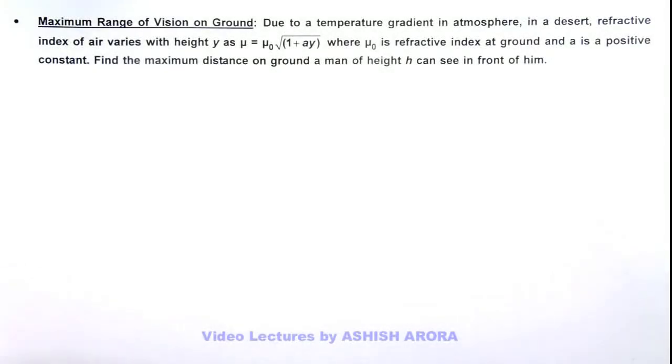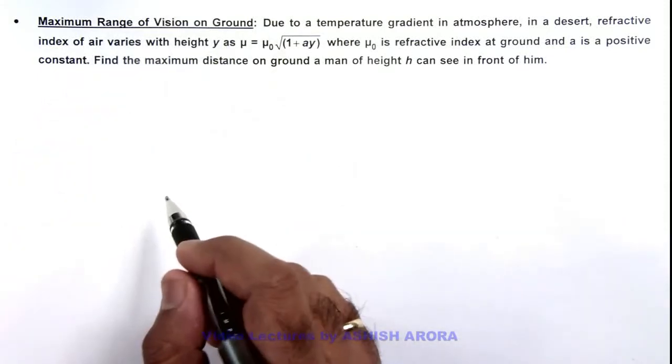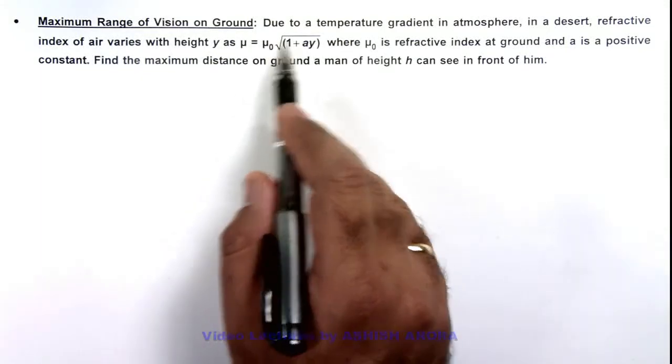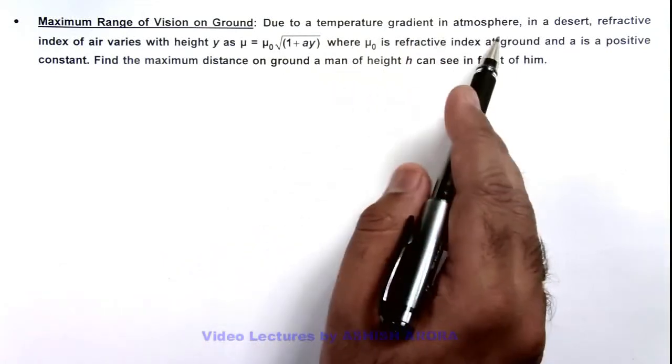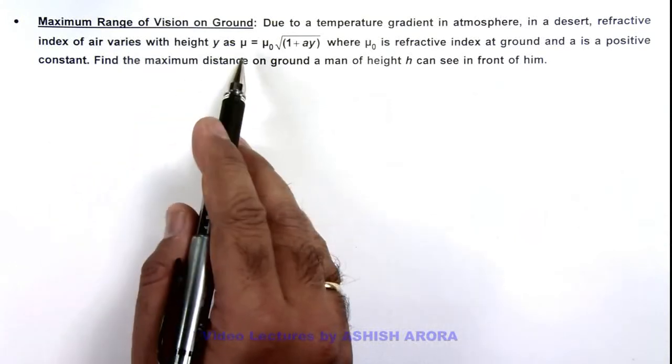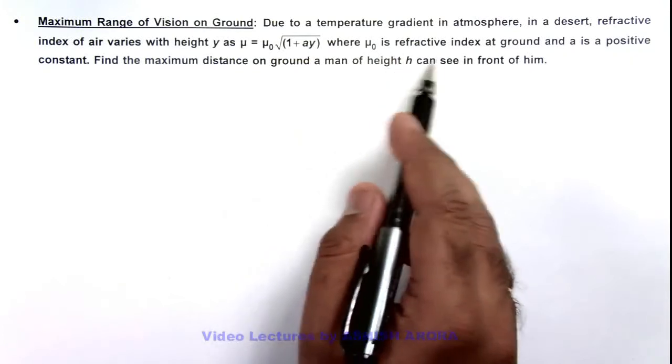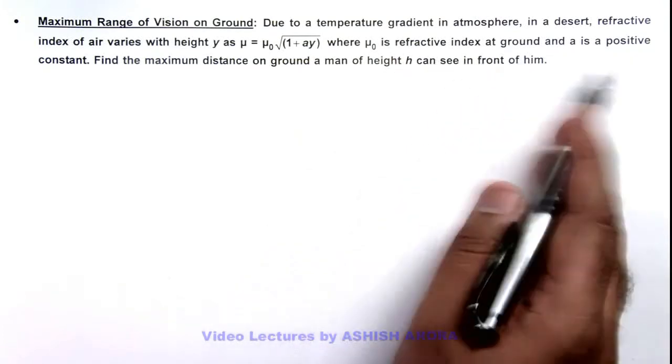In this illustration we'll analyze the maximum range of vision on ground. Here the situation says due to a temperature gradient in atmosphere, in a desert refractive index of air varies with height y as μ = μ₀√(1+ay), where μ₀ is refractive index at ground and ay is a positive constant.